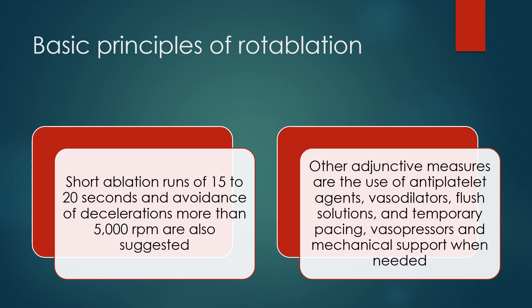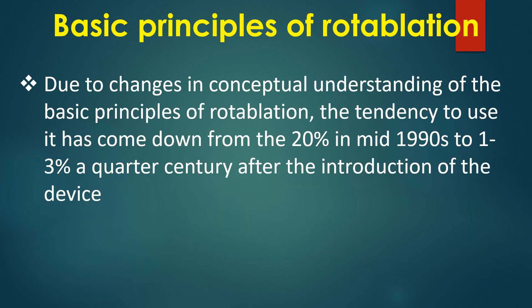Other adjunctive measures are the use of antiplatelet agents, vasodilators, flush solutions and temporary pacing, vasopressors and mechanical support when needed. Due to changes in conceptual understanding, the tendency to use rotablation has come down from around 20% in the mid-1990s to 1–3% a quarter century after the introduction of the device.